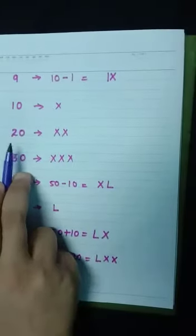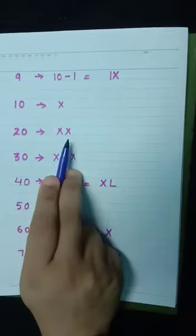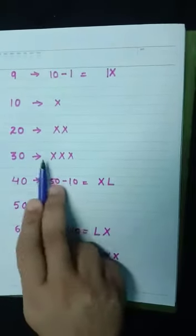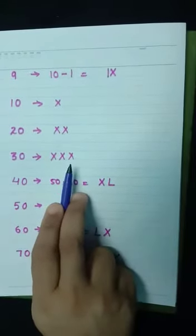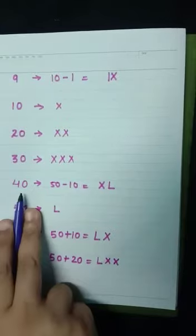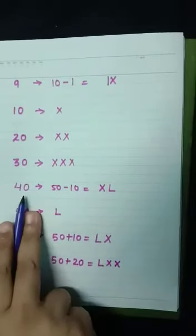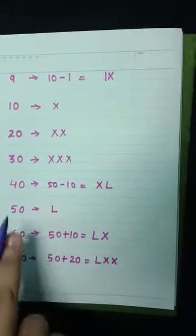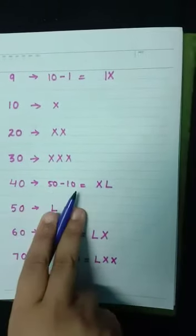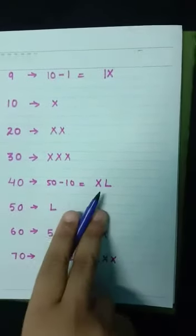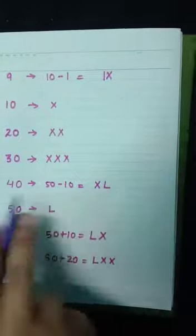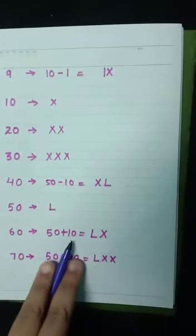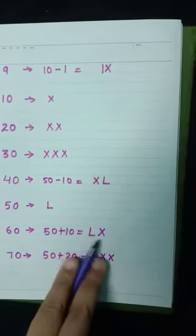20 means 10 plus 10, तो XX। 30 means 3X, यानि XXX। अब यहाँ X का maximum repetition हो गया — 3 times। Next symbol को दूसरी form में represent करना है। 40 के लिए 50 का symbol L है — 50 minus 10 = 40, that is XL। 60 means 50 plus 10 = LX।